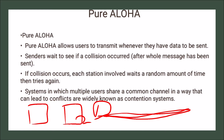A collision means more than one node is sending data at the same time. If a collision occurs, each station involved waits a random amount of time and then tries again. Systems in which multiple users share a common channel in a way that can lead to conflicts are widely known as contention systems.